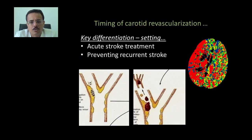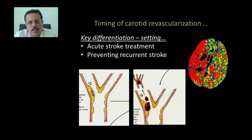There are two settings in which we do carotid stenting. Number one, a patient who has had a TIA or stroke and you want to do stenting to prevent further events. And secondly, in the acute stroke setting, when an embolus has gone and occluded a distal vessel, we take out the clot as well as perform carotid artery revascularization.